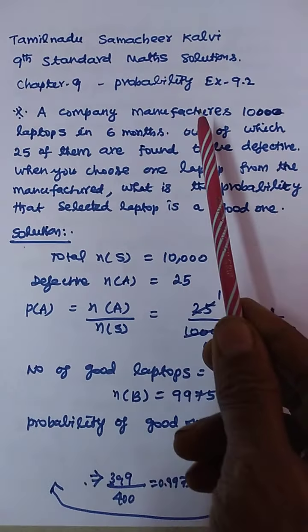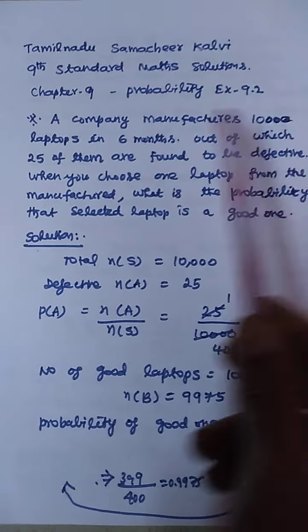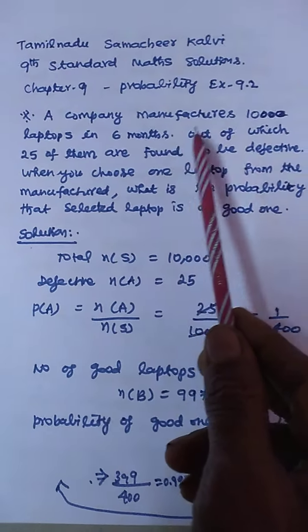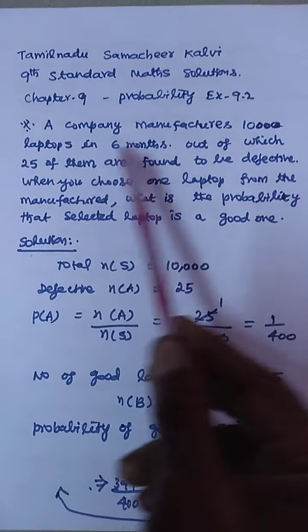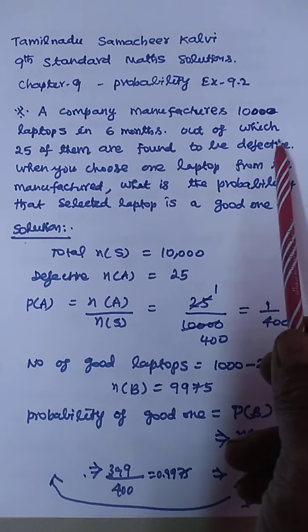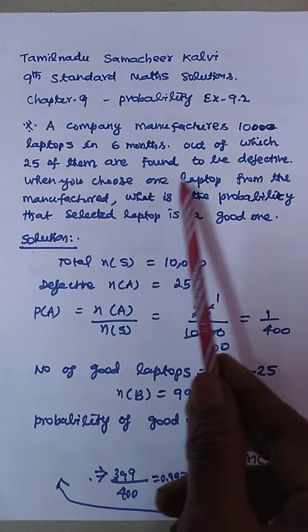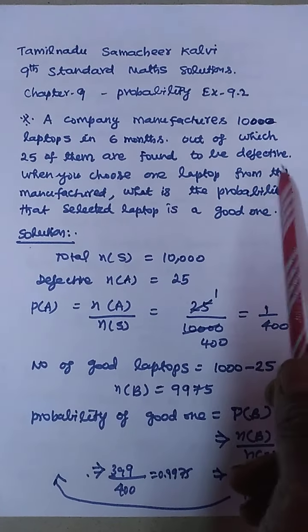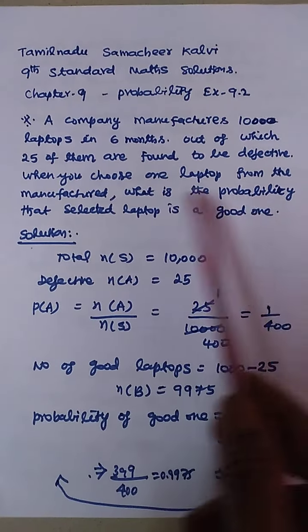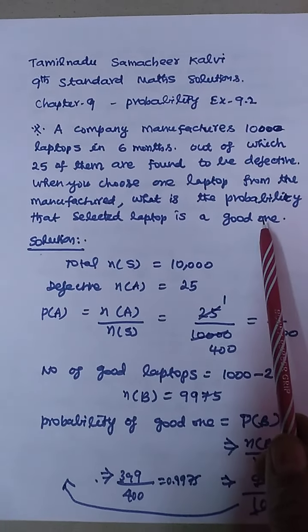A company manufactures 10,000 laptops in 6 months, out of which 25 of them are found to be defective. When you choose one laptop from the manufacturer, what is the probability that a selected laptop is a good one?